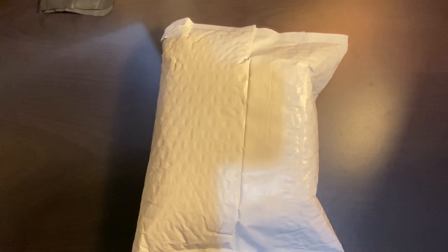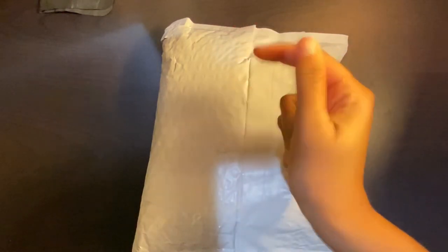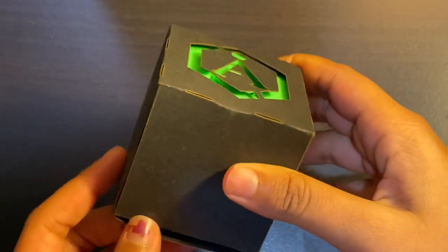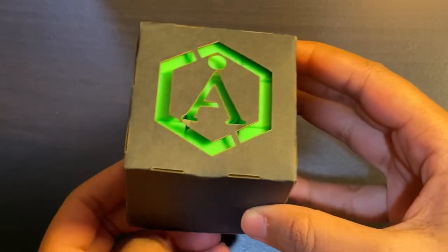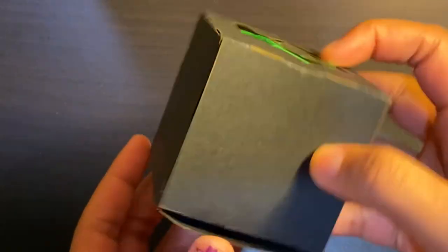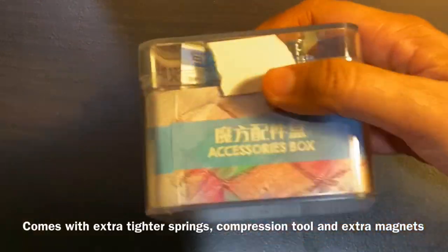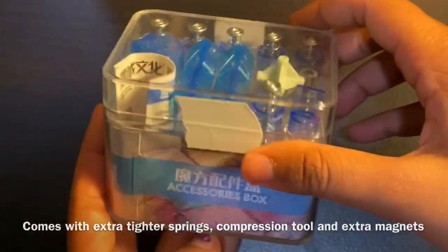Now that we've gone over the details, let's unbox the Angstrom Studio WRM. In here we've got the main item, which is the Angstrom WRM in this cool black Angstrom packaging. We've also got the normal accessories box that comes with the normal WRM out of the box.